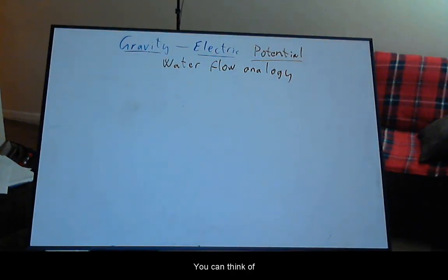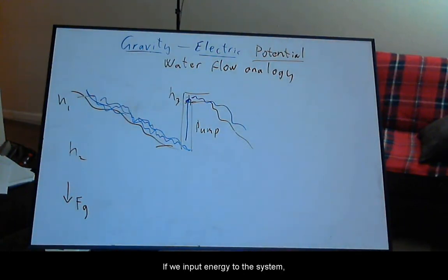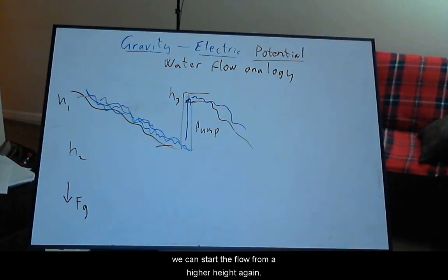You can think of going up or down a potential in terms of a water flow. Gravitational potential goes from high to low, from a higher height h1 to a lower height h2. If we input energy into the system with a water pump, we can start the flow from a higher height again.